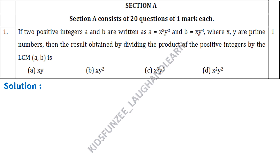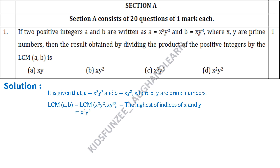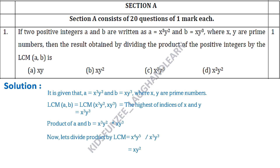Given A = x³y² and B = xy³, where x and y are prime numbers. The LCM is found by taking the highest indices of x and y. The highest power of x is 3 and of y is 3, so LCM = x³y³. The product of A and B gives x⁴y⁵. Dividing the product by the LCM: x⁴y⁵ ÷ x³y³ = xy². So option B, xy², is the right answer.